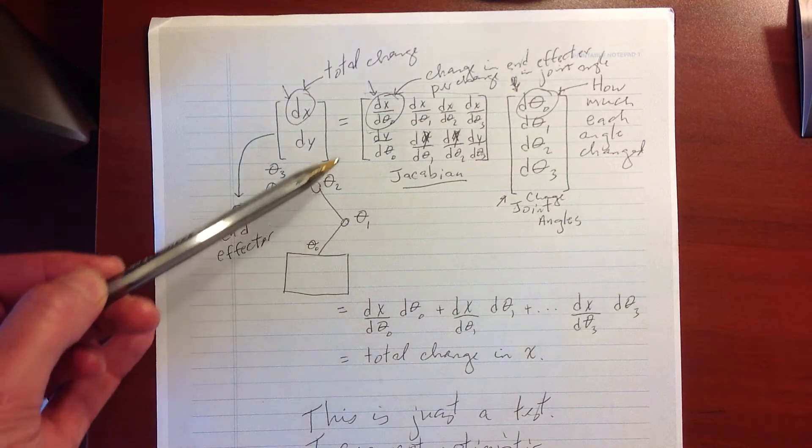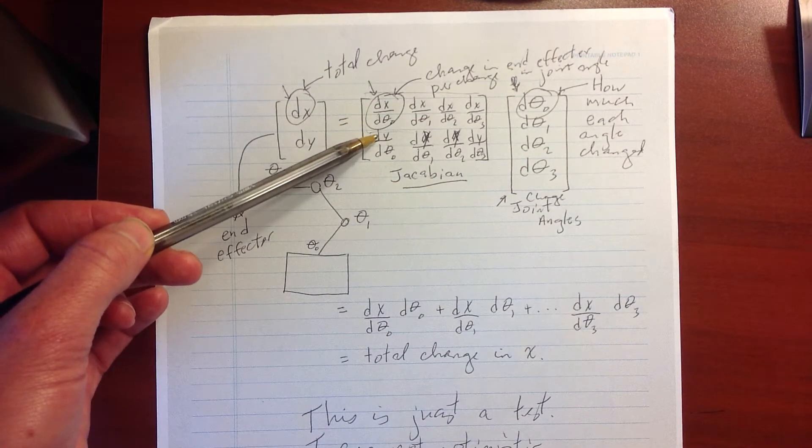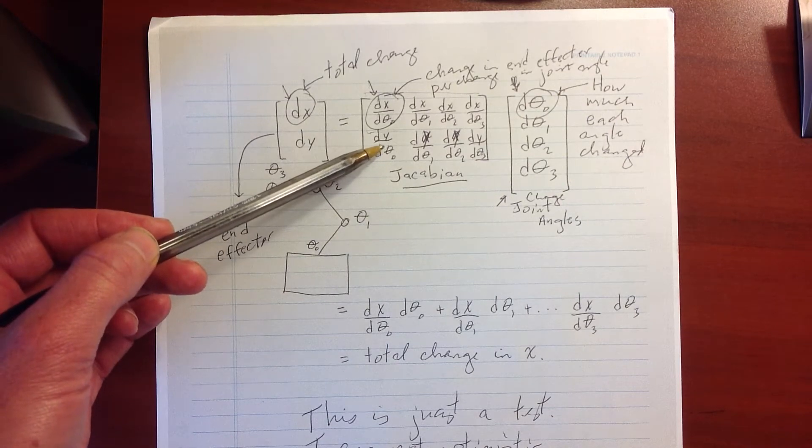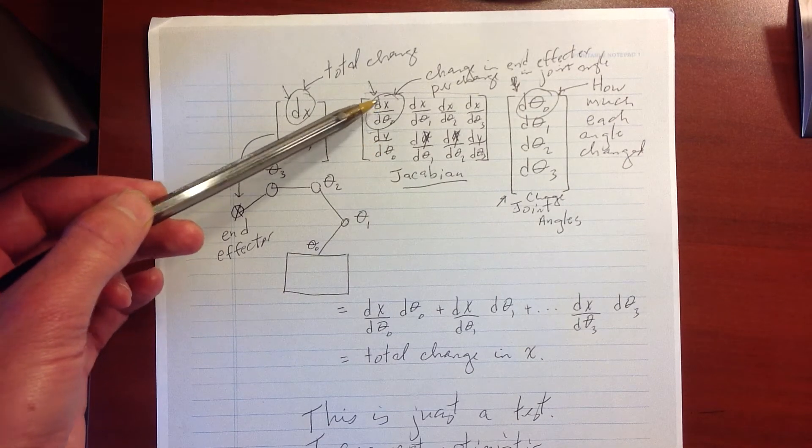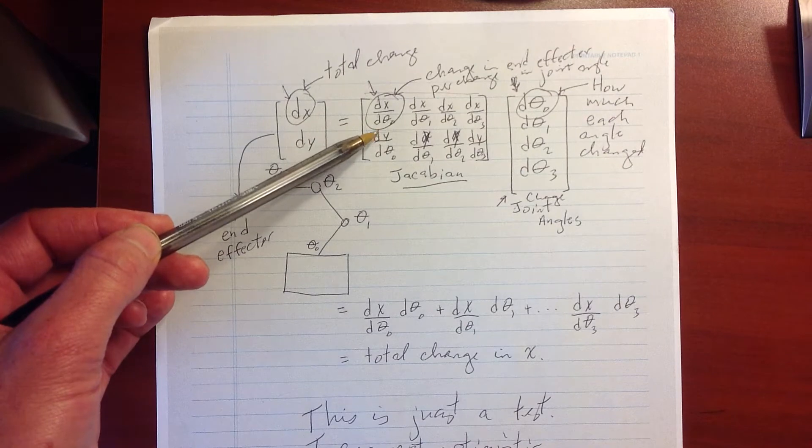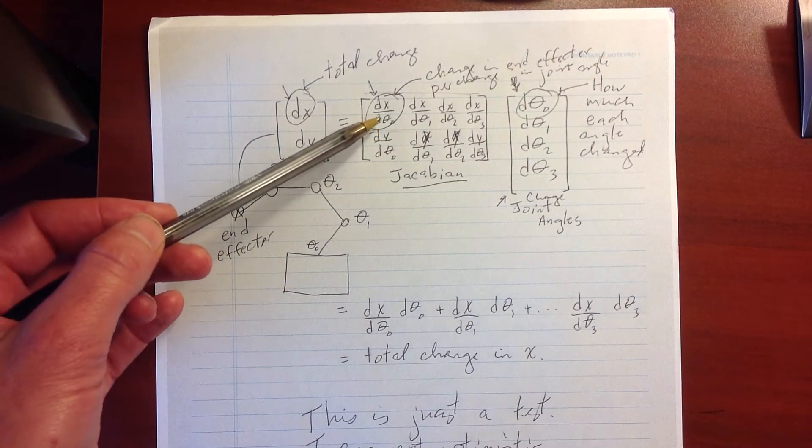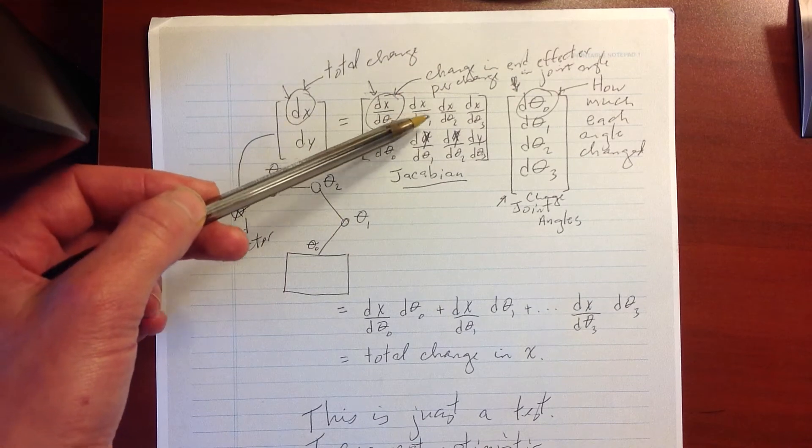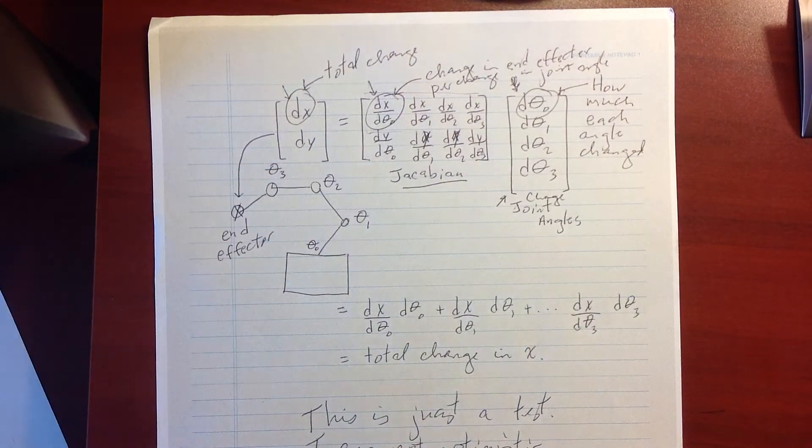In this case, theta 0 is that angle. And how to figure out the change in y given a change in a rotation angle. So we want to figure out dx for the end effector, dy for the end effector, given a change in d theta 0. And we'll do the same thing for d theta 1, d theta 2, and d theta 3.